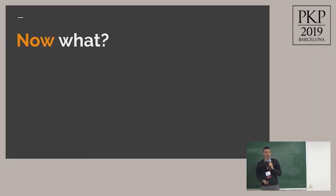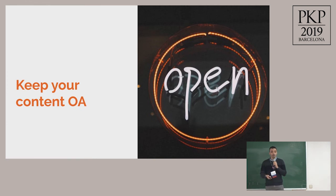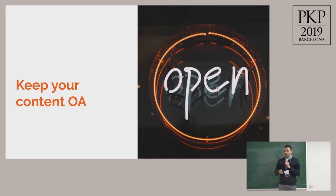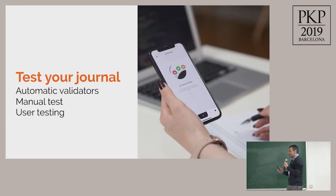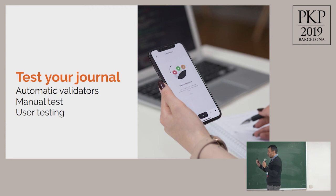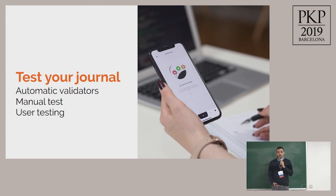So now what? Keep your content open access, please. Don't close your content. My second point: test your journal. You can start with automatic validators, then make manual tests, and then user tests. What is a manual test? What you just did with the PDF — you can test your content.